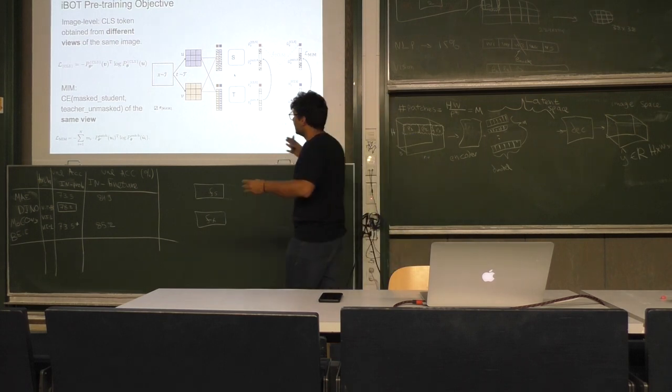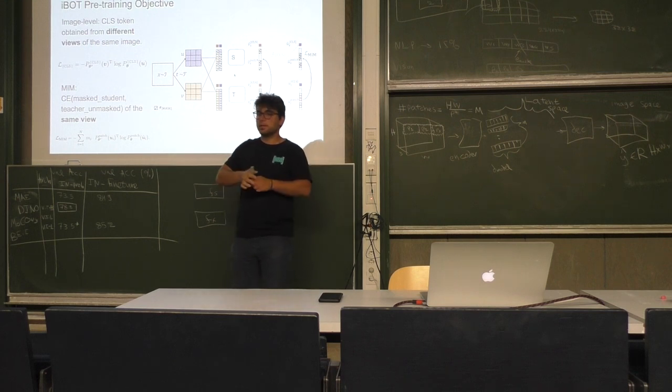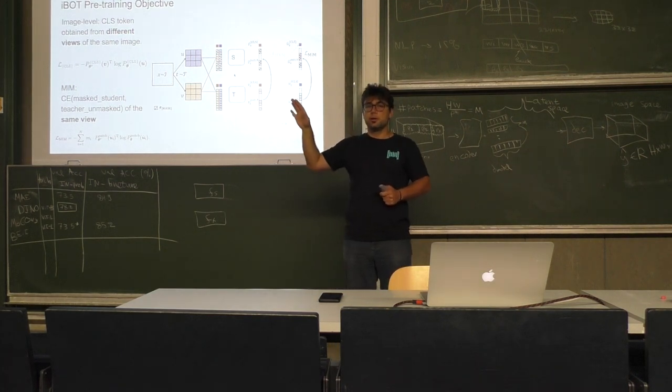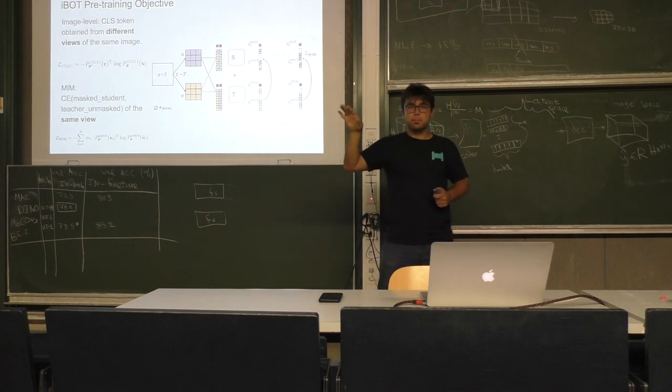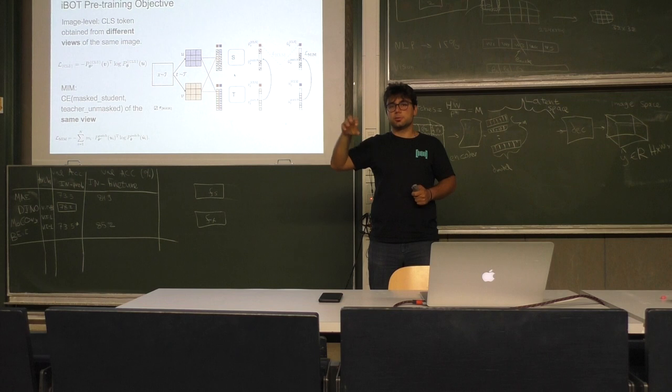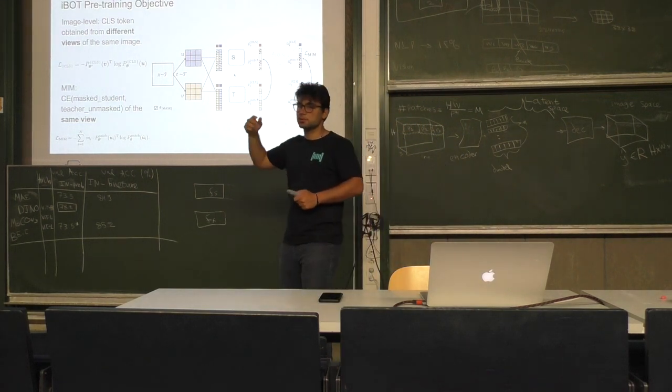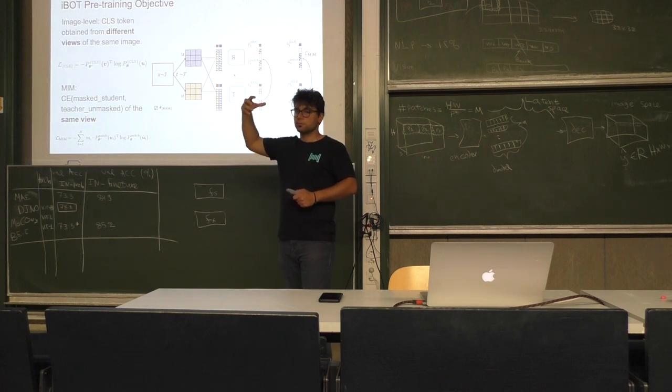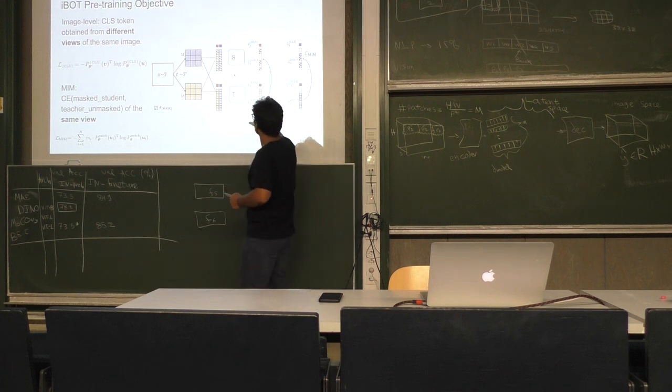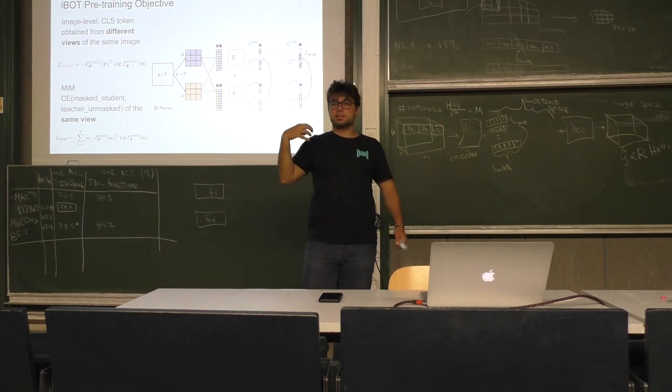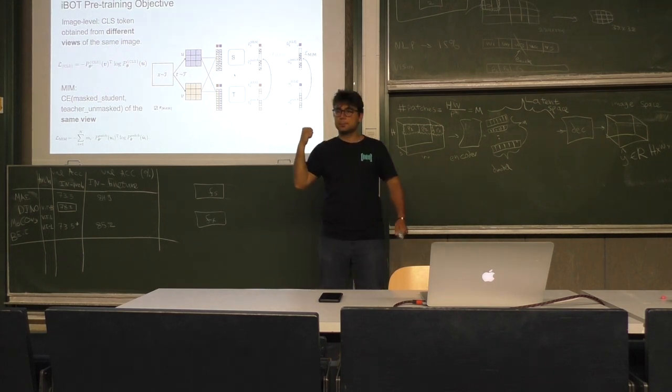This is the whole idea of masked image modeling. The main advantage is that the teacher is built dynamically with exponential moving average, allowing the teacher to evolve through training. We are no longer bounded by the performance of the pre-trained teacher or tokenizer, as in the Bait approach. The visual vocabulary is learned throughout training, not predetermined.